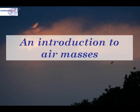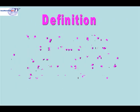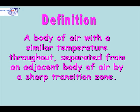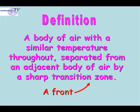This video is an introduction to air masses. Let's start off by defining what an air mass is. An air mass is a body of air with a similar temperature throughout, separated from an adjacent body of air by a sharp transition zone. That sharp transition zone is known as a front, and basically all the front is doing is showing you the boundary between two differing air masses.